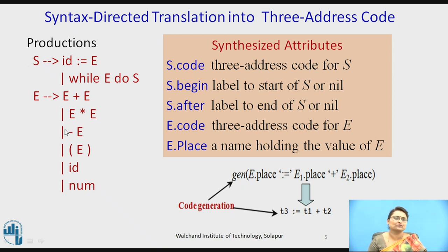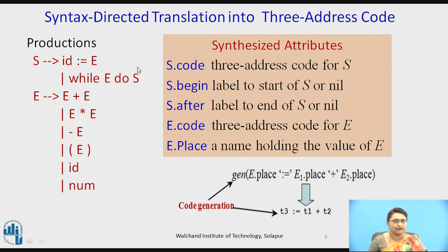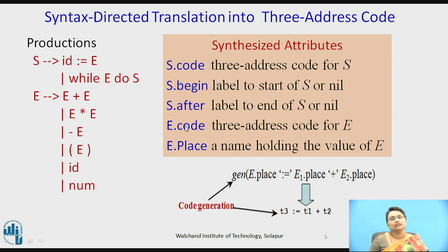Consider two types of productions: one is a simple statement producing id assigns to e, and a while-loop production; the other is a simple arithmetic expression. For the statement s, it has three attributes: code represents the actual three-address code, while begin and after are labels used for loops — begin is a label at the start of the loop and after is created at the end.